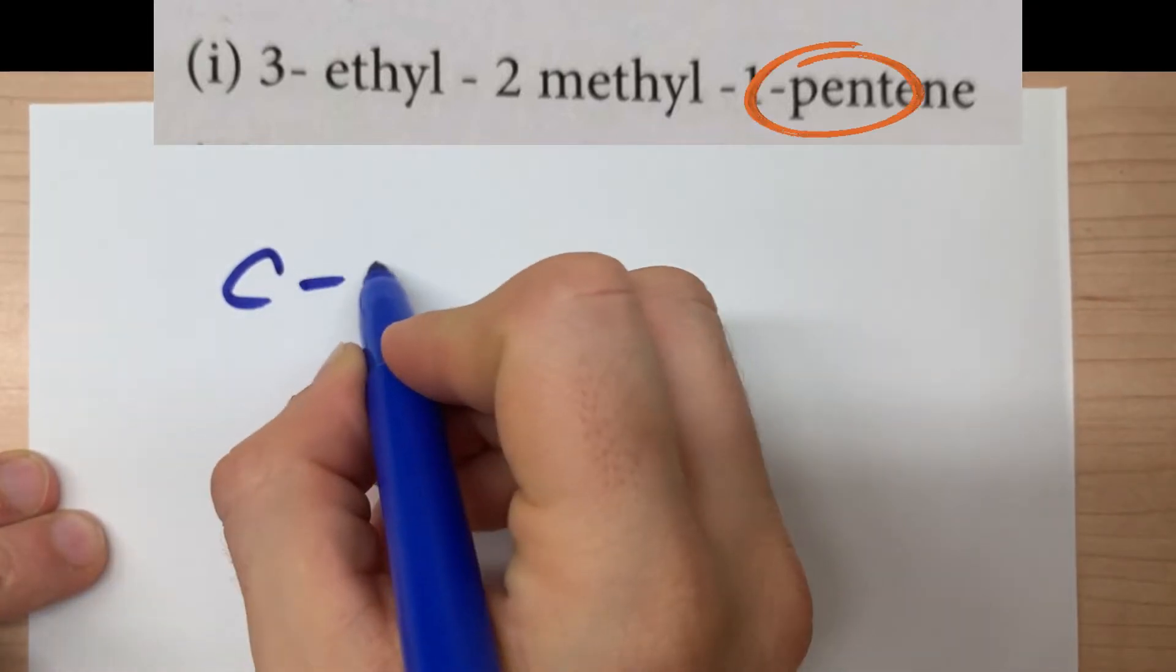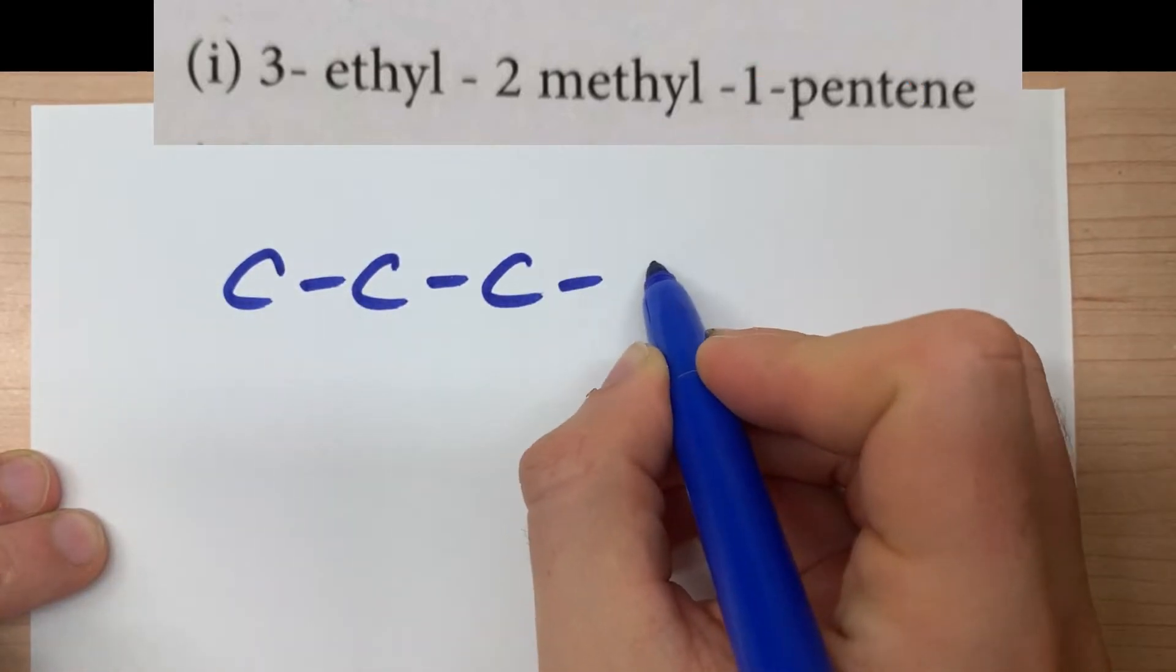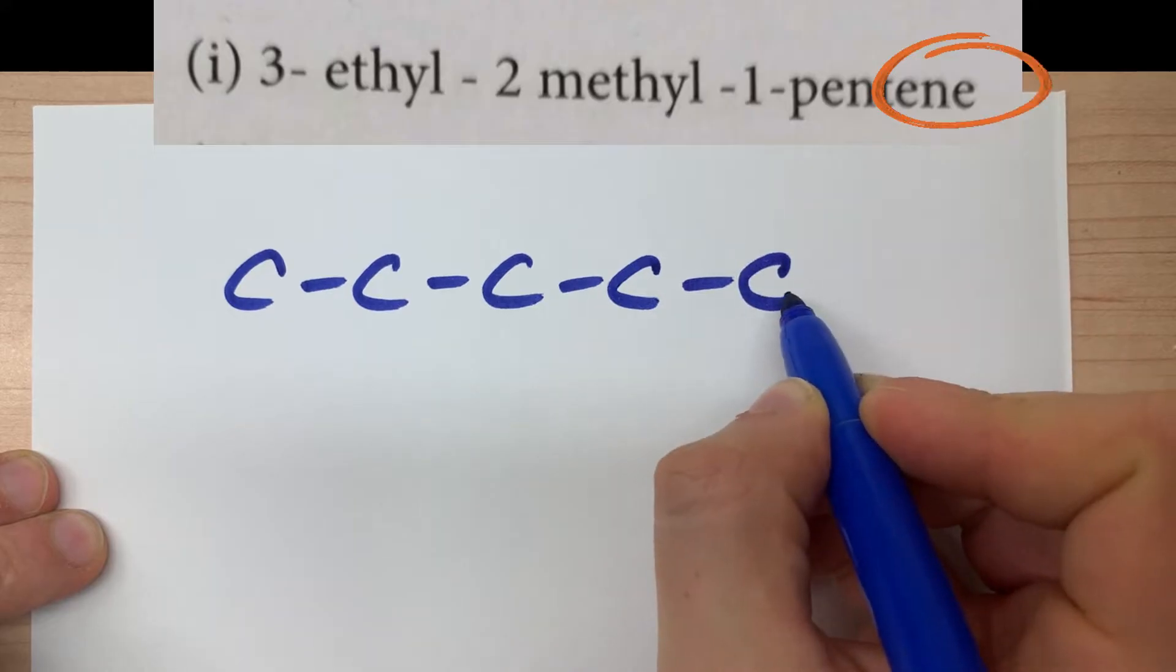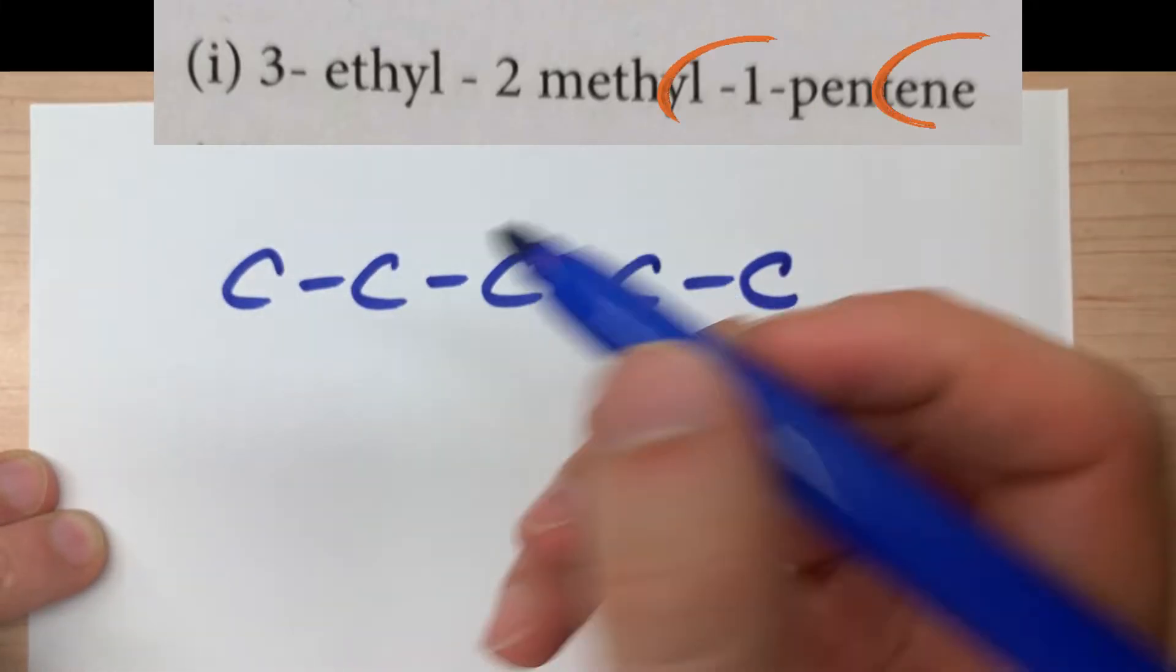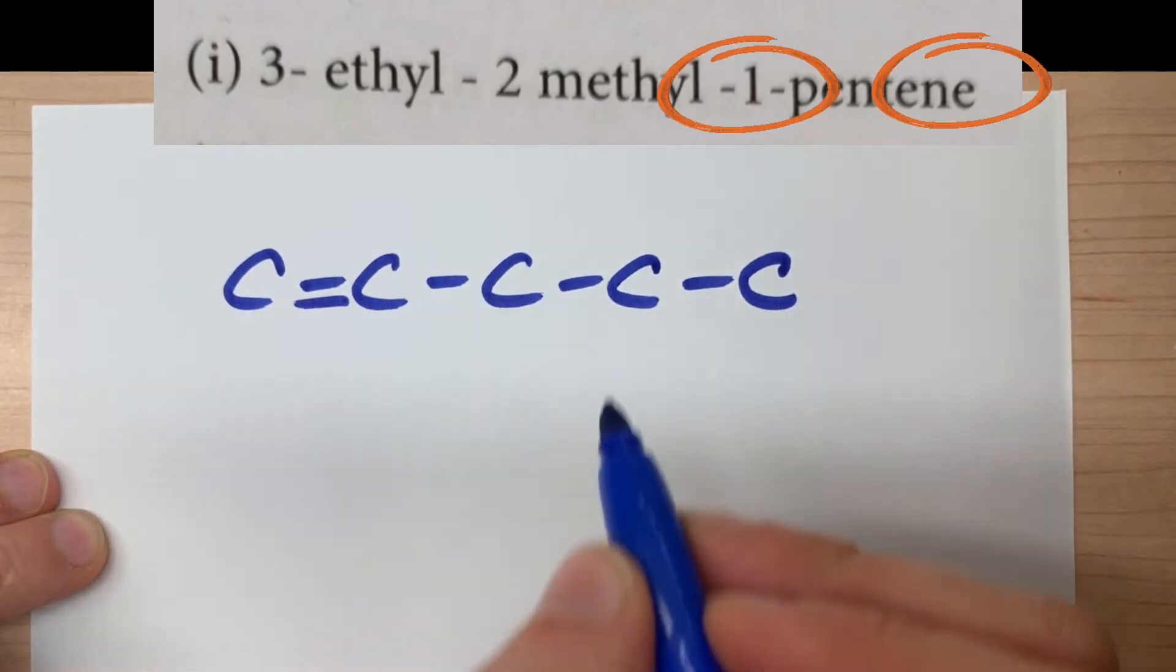Pent means we have five carbons in a row. The ene means there's a double bond starting at carbon one. That's what the one is for in front of pentene.